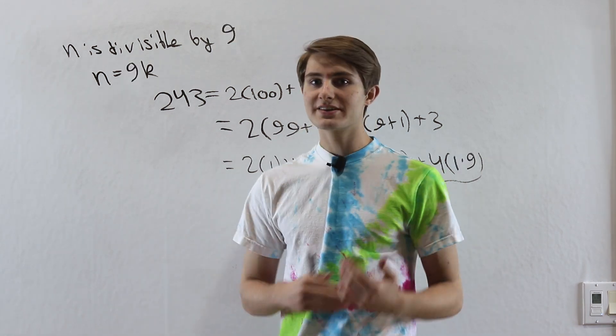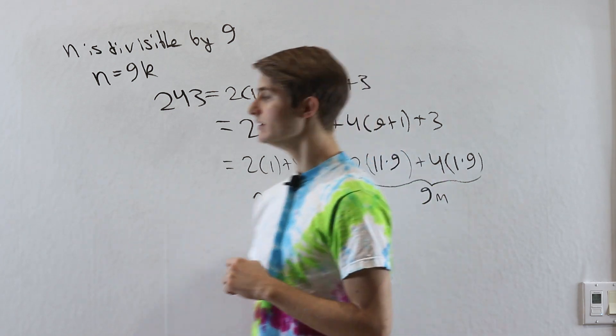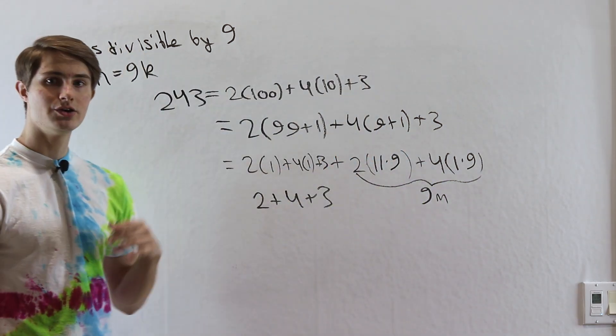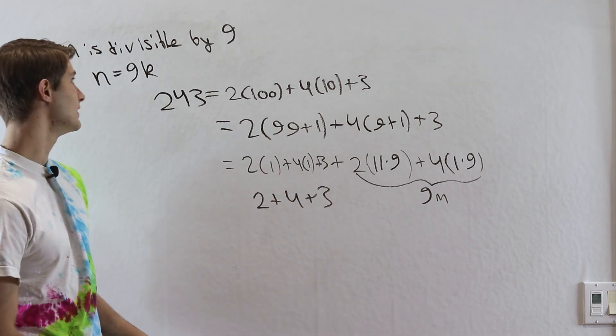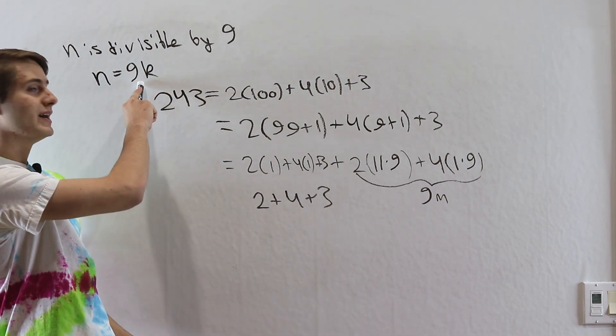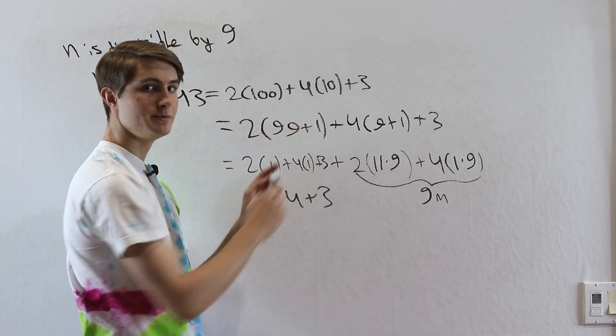Now we can actually do the exact same thing if instead we're looking at whether something is divisible by 9. Notice what I've done here is taken all the exact same steps that we did before, but swapped in 9 for 3. So we want that n is equal to 9 times the integer k. We can split up 100 and 10 the same way we did before.